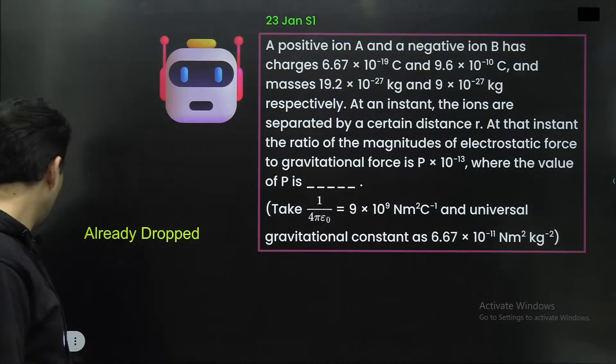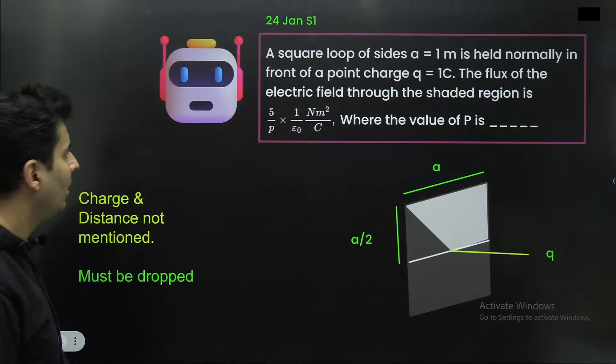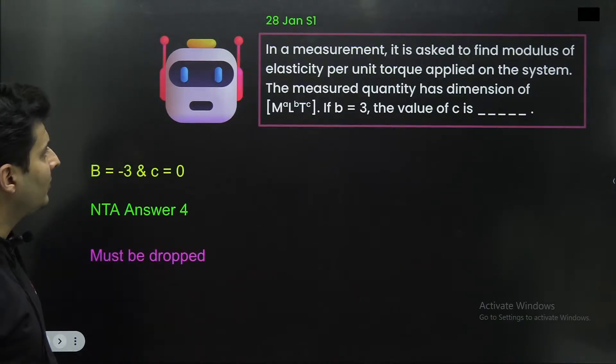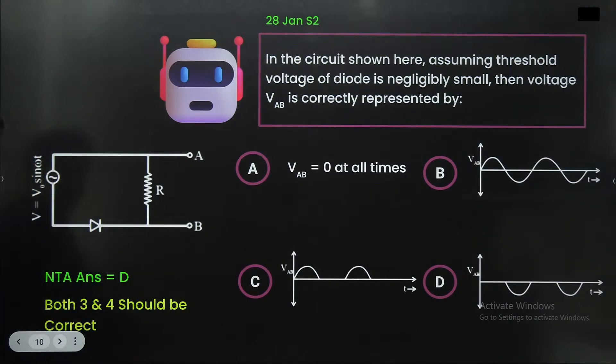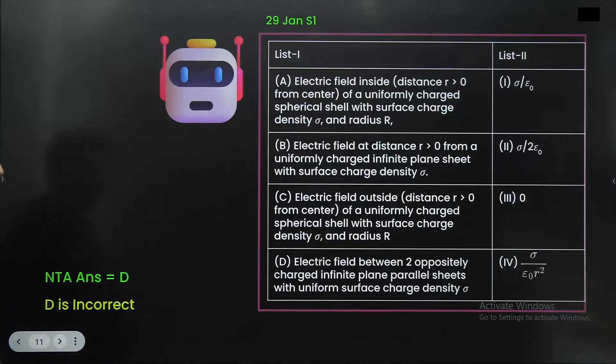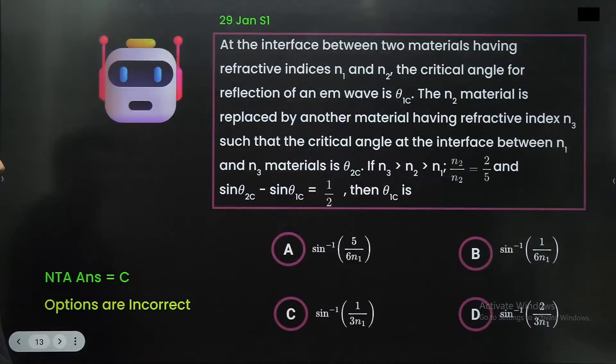This particular question, non-solvable. This question needs to be dropped. Well, some of the questions, again, which needs to be dropped on the flux calculation. Then one of the question on the torque and the dimensions. Then this particular question on rectifier. Yep. Both three and four options should be correct. Apparently, then this particular match the following question, where D was incorrect. All right.